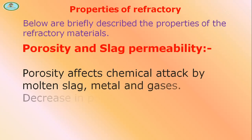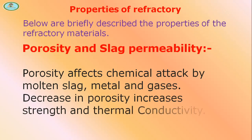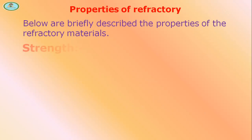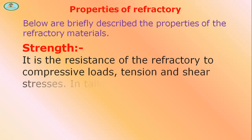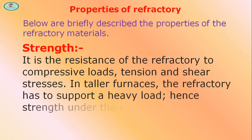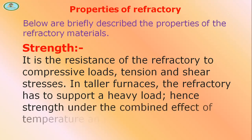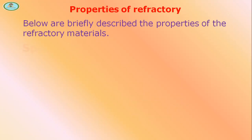Porosity and slag permeability: porosity affects chemical attack by molten slag, metal, and gases. A decrease in porosity increases strength and thermal conductivity. Strength is the resistance of refractory to compressive loads, tension, and shear stress. In taller furnaces, the refractory has to support a heavy load; hence, strength under the combined effect of temperature and load — refractoriness under load — is important.